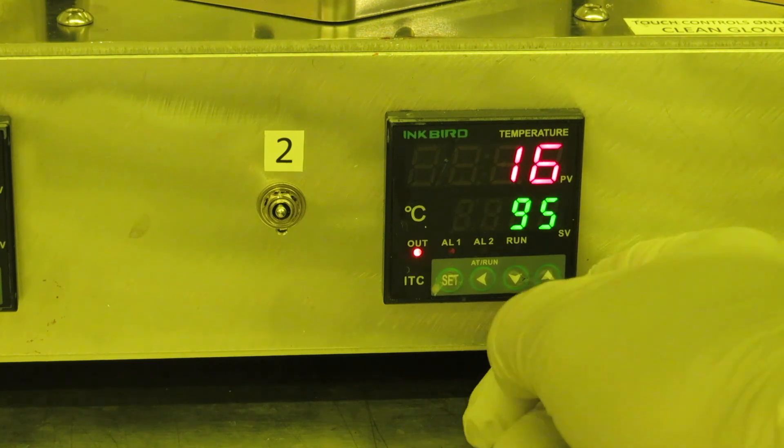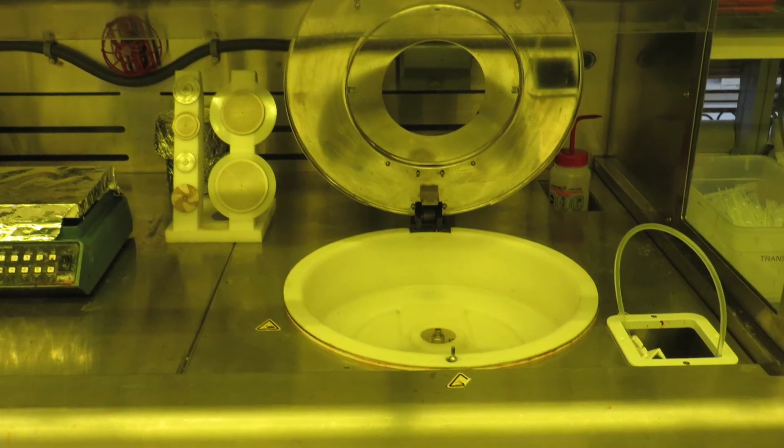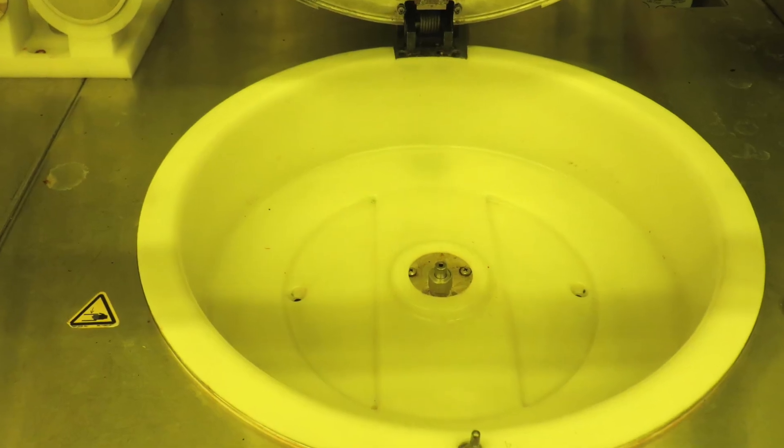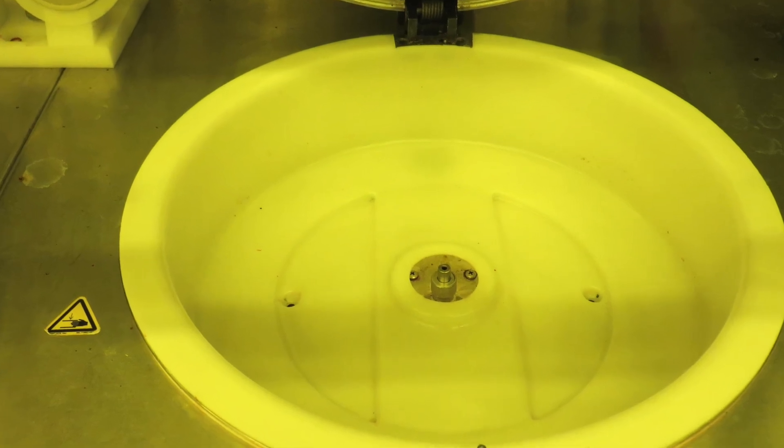The spinner is capable of speeds up to ten thousand RPM, although we rarely go above six thousand RPM. It is very important that you are wearing safety glasses while you're spinning in case a wafer flies off and shatters. You should always have the lid closed during spinning, although I will have it open for demonstration purposes.